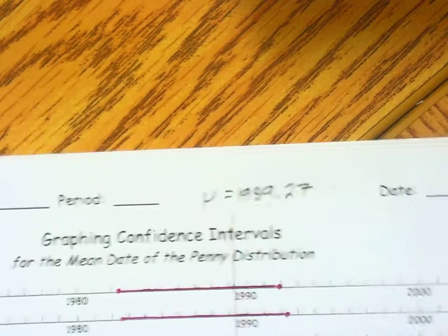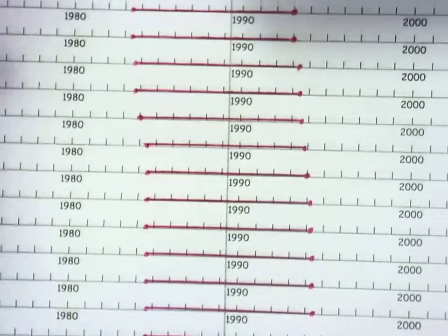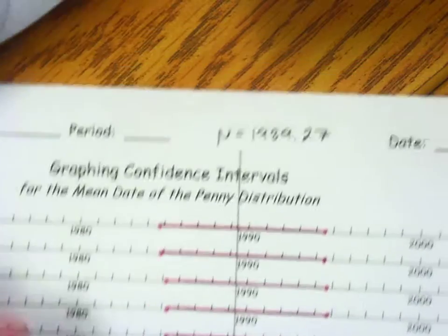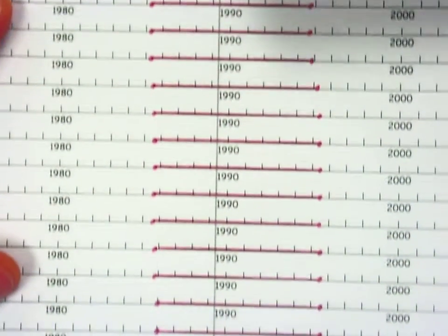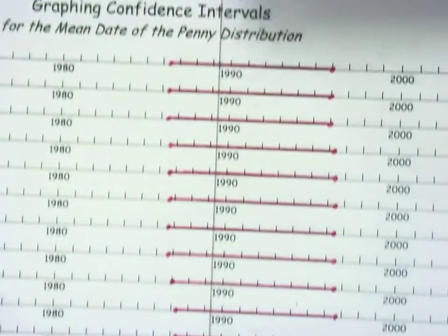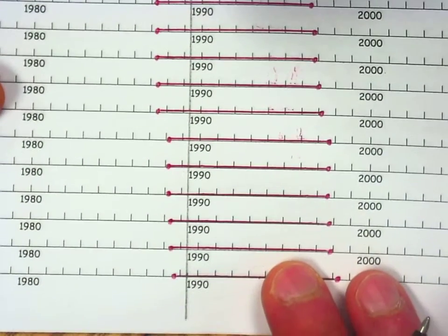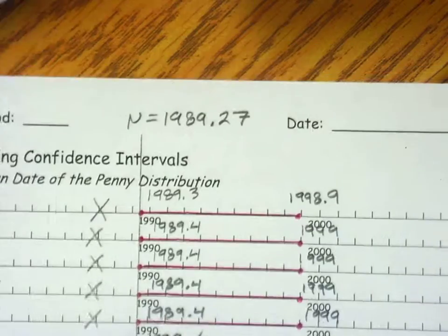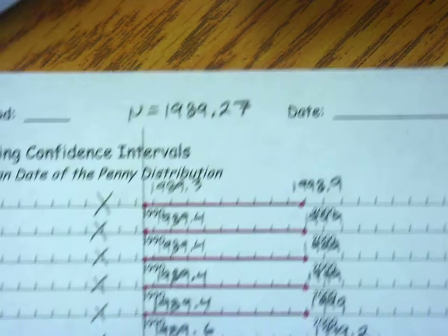Notice we have lots and lots of confidence intervals — all of these are capturing the true population parameter. The pencil line in the middle is the true population parameter. Lots and lots of them across page after page — we have 93 confidence intervals built here.